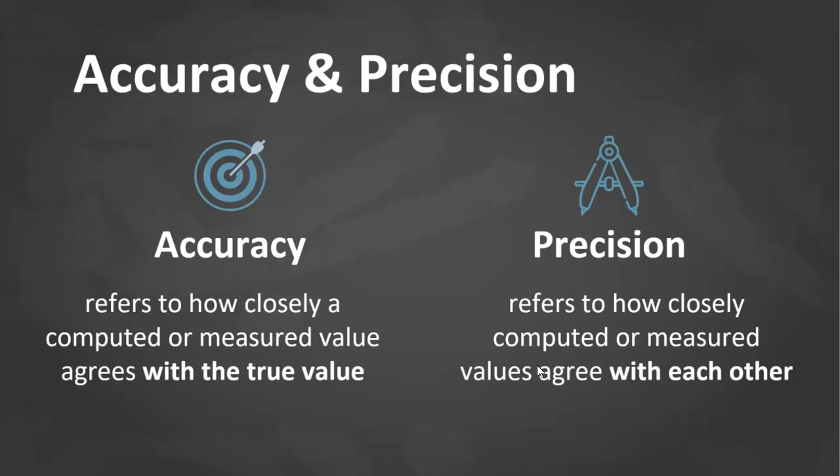Accuracy refers to how close a computed or measured value agrees with the true value. Precision refers to how close computed or measured values agree with each other. So accuracy is with respect to the true value, precision is with respect to the measured values themselves.